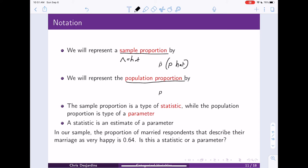So the sample proportion is a type of statistic, while the population proportion is a type of parameter. Statistics describe samples, and parameters describe populations. So this will describe a sample. This will describe a population.